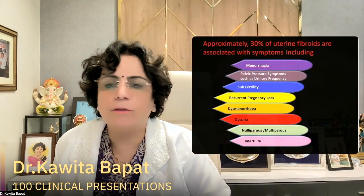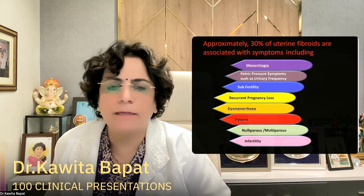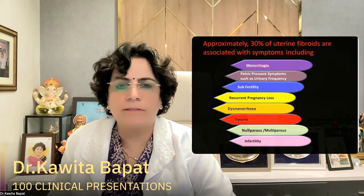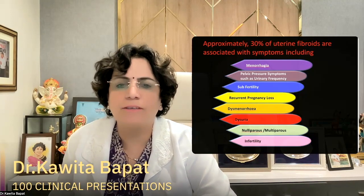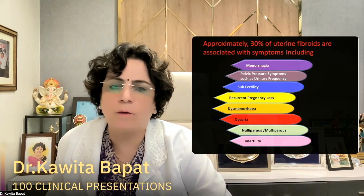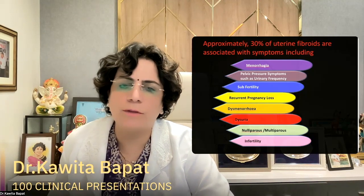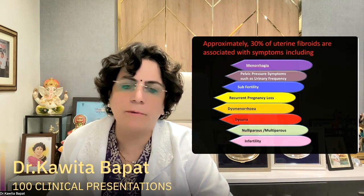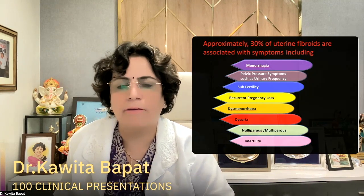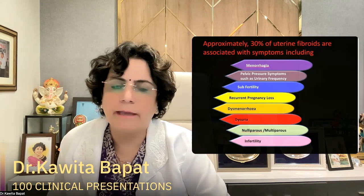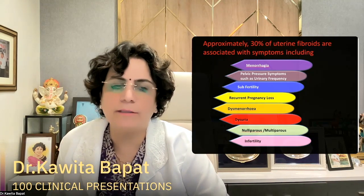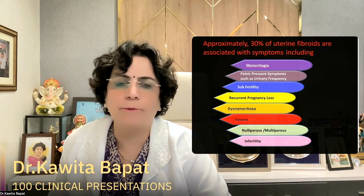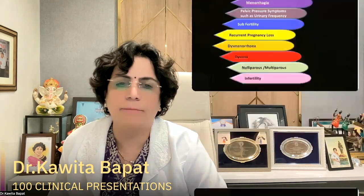Approximately 30 percent of uterine fibroids are associated with menorrhagia. Sometimes there is pelvic pressure, urinary frequency, sub-fertility, recurrent pregnancy loss, dysmenorrhea, dysuria. In nulliparous or multiparous women, large fibroids can be present, and infertility is one of the reasons patients have fibroids.